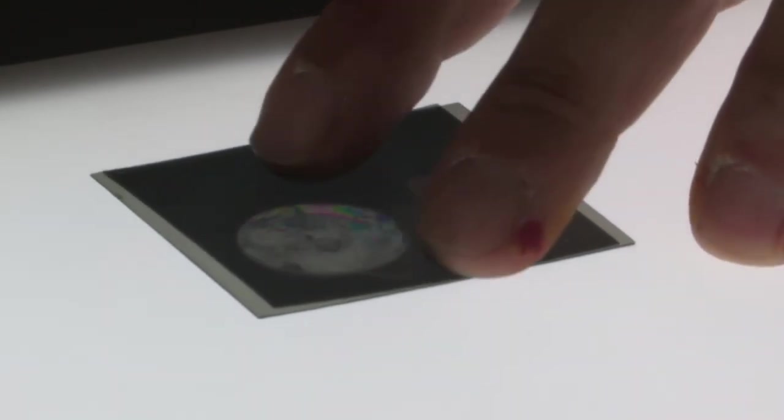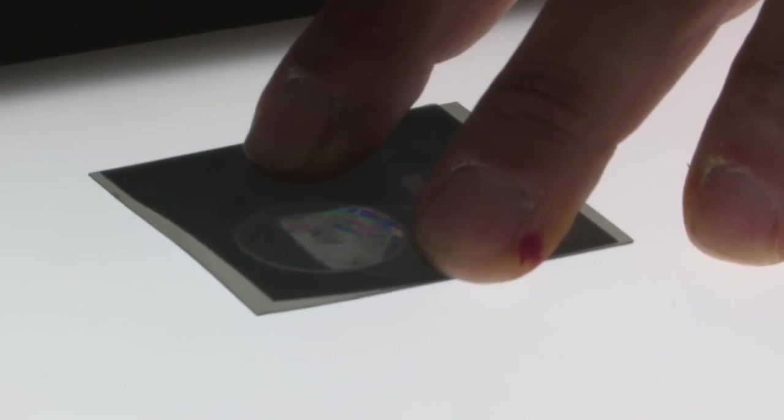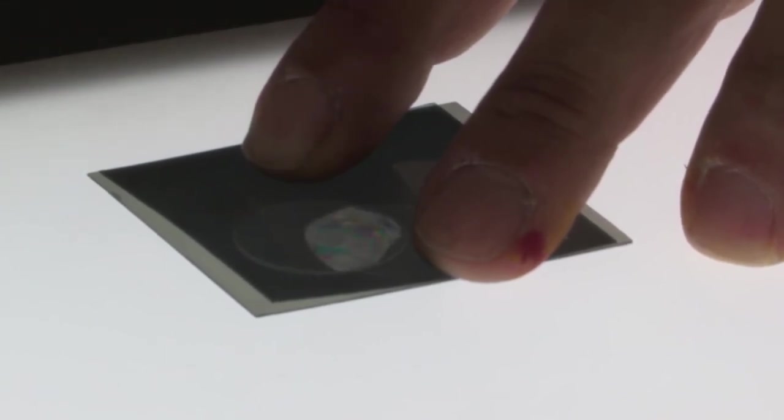And then if I heat it up, as you melt it and turn it back to a liquid, it goes dark again. And then it cools down, turns back to a liquid crystal, and we get the light coming through once more.